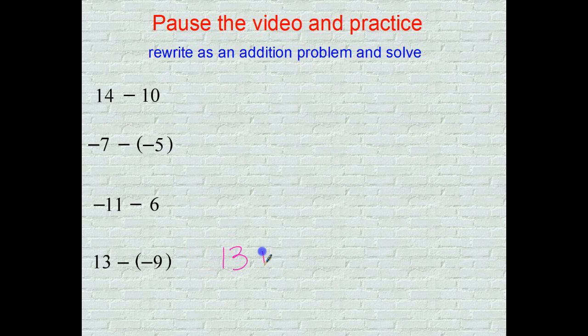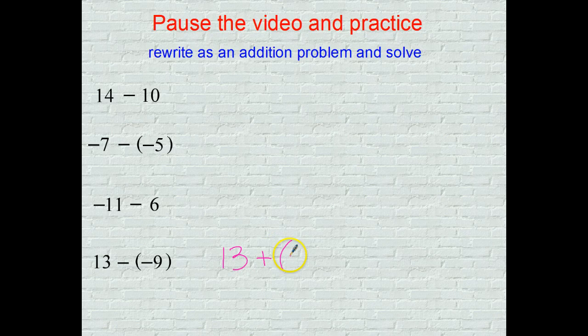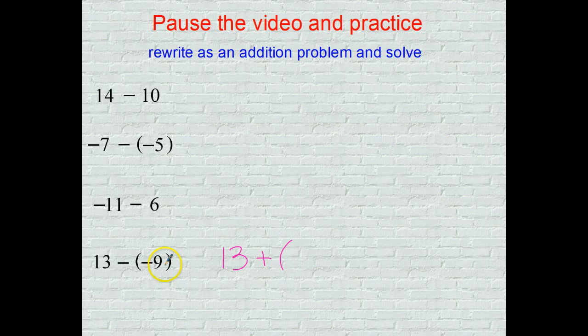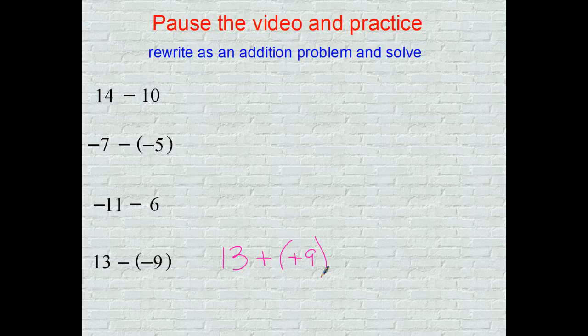If we add it, we have to change it to 13 added to... the negative 9 becomes positive 9. This is the additive inverse. It reads 13 added to 9, and you all know what 13 plus 9 is.